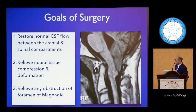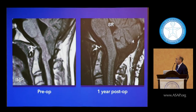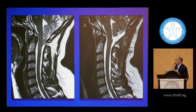What are our goals? One is to restore normal flow, relieve neural tissue compression and deformation, and if syringomyelia is present, relieve obstruction at the foramen of Magendie. Our goal is to take this very abnormal, crowded scenario and return it to a normal state one year post-op — a brainstem following a more natural course once it has relaxed.